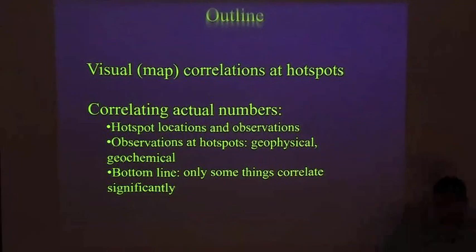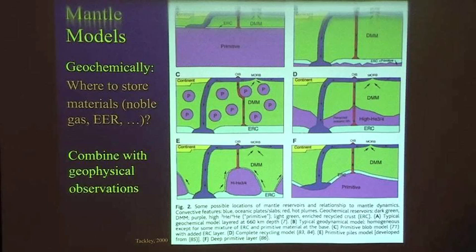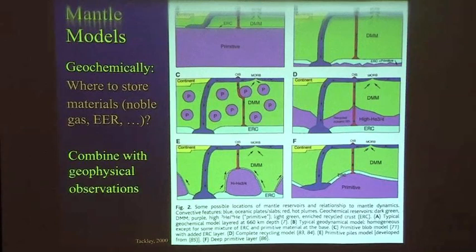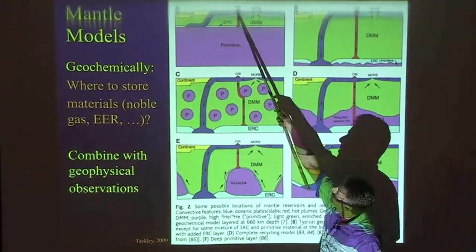Why am I interested in this? I'm coming at this from the geochemical side — where are things in the mantle? Where can we hide the early enriched reservoir, or have different reservoirs for the different compositions you sample at hotspots at the surface? The idea is that we need places to store things because we see geochemical signatures that require millions or billions of years to mature from radiogenic systems. We need other things to combine together to get an idea of what this might look like.